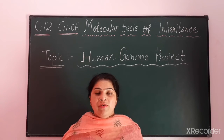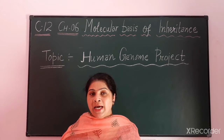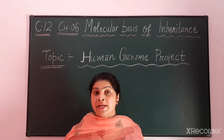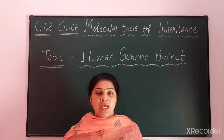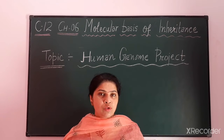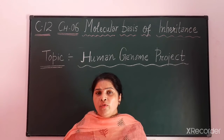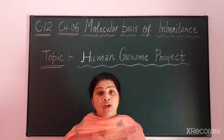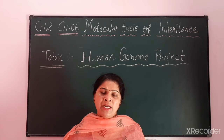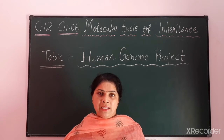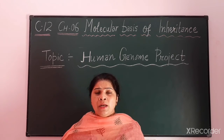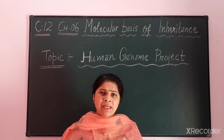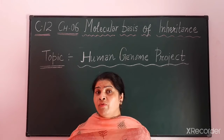Now what is genome? We have read in the 5th chapter that genome means the total set of genes present in a haploid set of chromosomes. The total genes which are present in our haploid set of chromosomes is known as genome. Now we all human beings have a total of 46 chromosomes and the approximate number of nucleotides is 3 billion. We all have the same chromosome number and the same number of nucleotides, but still we differ from one another.